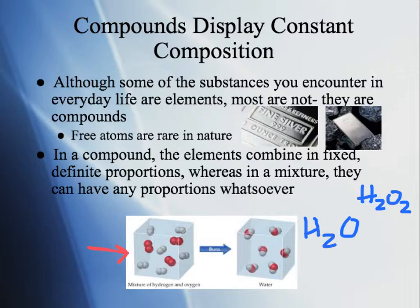A mixture does not have definite proportions. The compound water, however, has definite proportions: for every oxygen atom, there are two hydrogen atoms attached to it. That's the difference between a mixture and a compound.